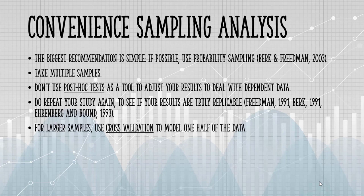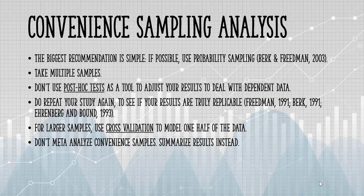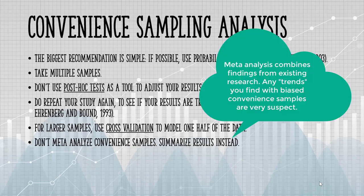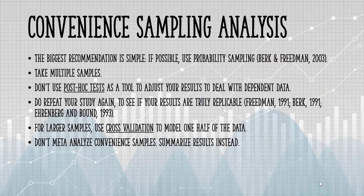For larger samples, use cross-validation to model one half of the data. You can then compare the results with the second half of the data to see if they match. Finally, don't meta-analyse convenience samples — summarize the results instead.